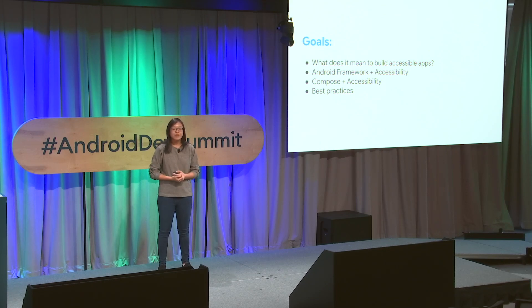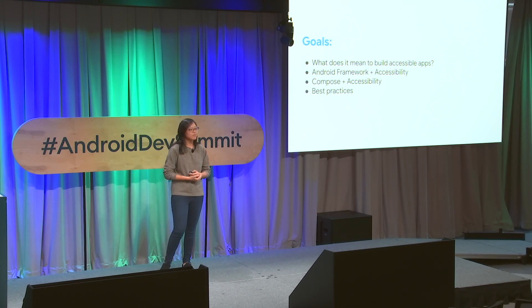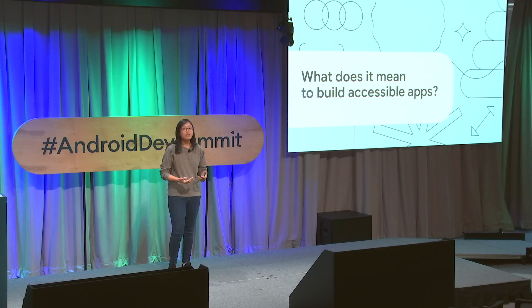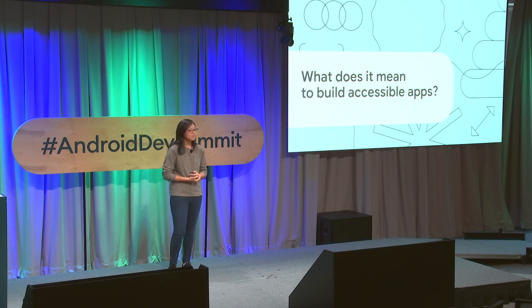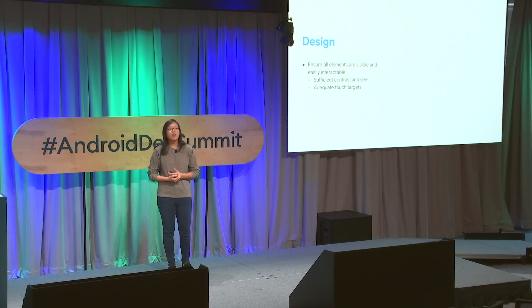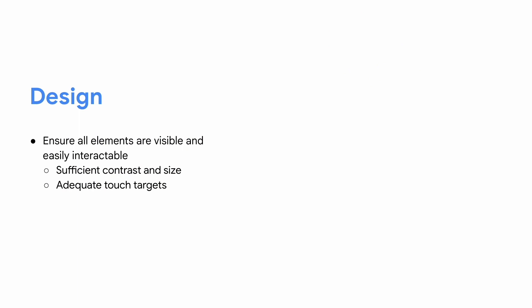Finally, we'll end with a couple of best practice tips that you can keep in mind in the future as you're developing apps. So to start off, I wanted to give a quick overview on the different ways to think about accessibility. The first aspect to consider is the design of your app — making sure that all the elements in your app are easily visible and interactable, which is important because it makes it more accessible for all users.